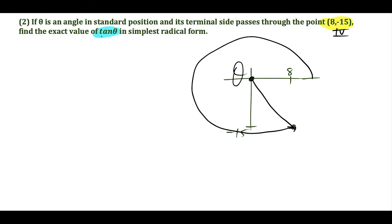To find tangent theta, we use the reference angle. A reference angle is the positive acute angle formed by the x-axis and the terminal side of the angle. We highlight the x-axis and terminal side, and it makes this acute angle here, so we build a right triangle. To reach this point we go right 8 units and down 15 units. We don't need the hypotenuse for tangent, but this is an 8-15-17 right triangle.